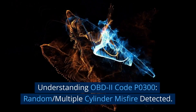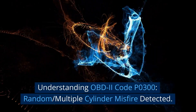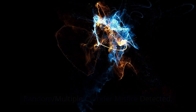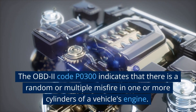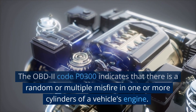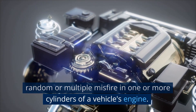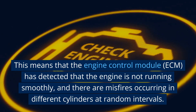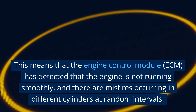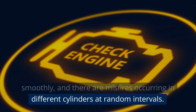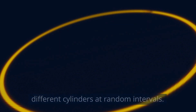Understanding OBD-2 Code P0300: Random Multiple Cylinder Misfire Detected. The OBD-2 Code P0300 indicates that there is a random or multiple misfire in one or more cylinders of a vehicle's engine. This means that the engine control module, ECM, has detected that the engine is not running smoothly, and there are misfires occurring in different cylinders at random intervals.